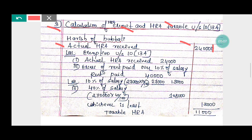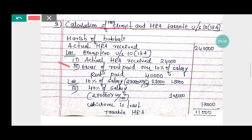Exemption under Section 10 sub-section 13A: we will give the exemption as the least of the three. First — actual HRA received by Mr. Harish. Second — excess of rent paid over 10% of salary. Here, the rent paid by Mr. Harish is Rs 40,000. Less 10% of salary.